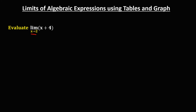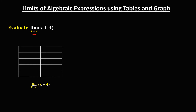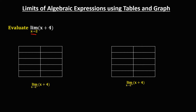To solve this problem using tables, we need to create a table for the left-side limit and a table for the right-side limit. For the left-side limit, as x approaches to the left of positive 2, x is less than positive 2. We pick numbers closer to positive 2: 0, 1.5, 1.99, and 1.999.